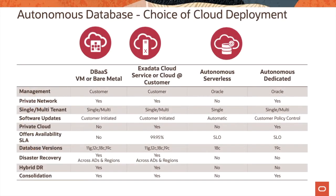This slide shows you the various cloud deployment models for databases on Oracle Cloud Infrastructure. You can start off with Database as a Service — virtual machine or bare metal — or deploy Exadata Cloud Service on Oracle Cloud Infrastructure or at the customer site. And finally, we have the Autonomous Serverless and Autonomous Dedicated offerings.